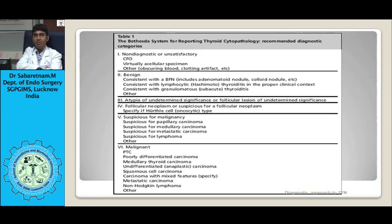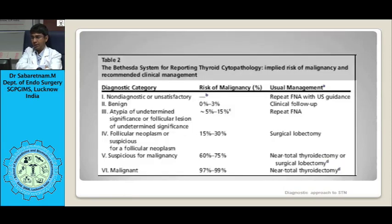Complications of FNAC are very rare with expert endocrine pathologists, but can include pain, hematoma, inadvertent entry into the trachea, transient hemorrhage causing thyroid swelling, cystic degeneration, bradycardia from hitting the sympathetic chain, transient vocal cord palsy from hitting the recurrent laryngeal nerve, calcification, necrosis of the nodule, capsular pseudo-invasion, fibrosis, transient thyrotoxicosis, and elevation of thyroglobulin.